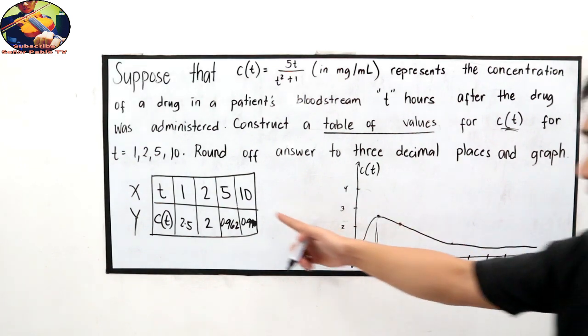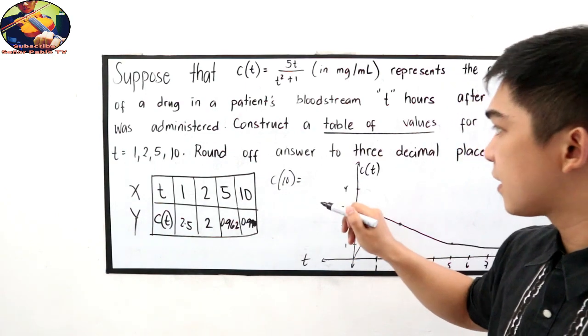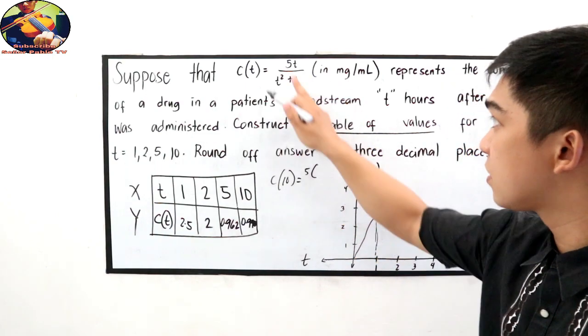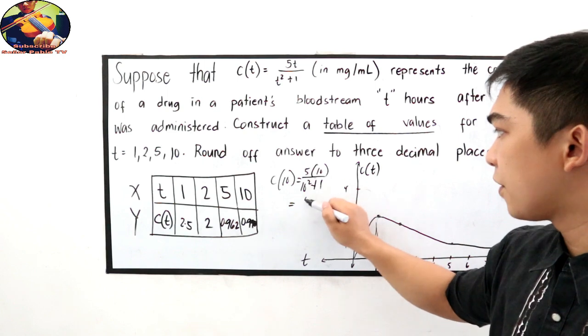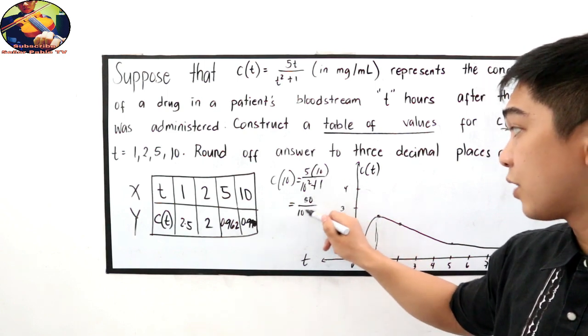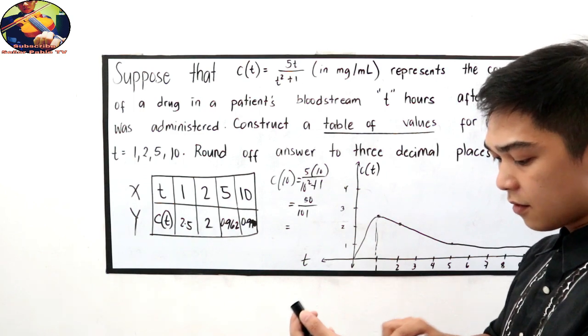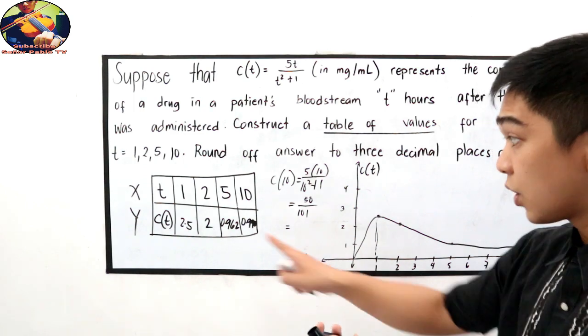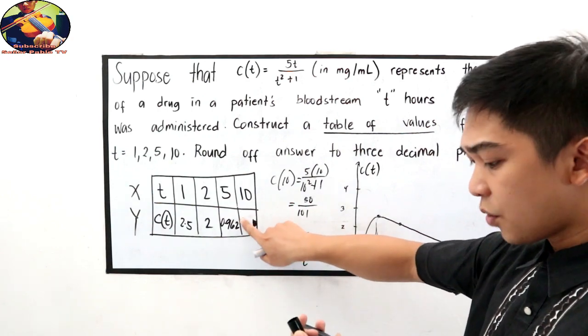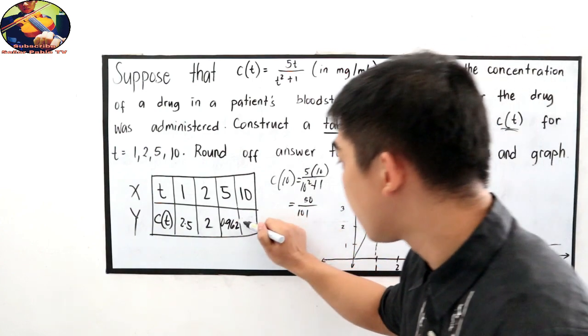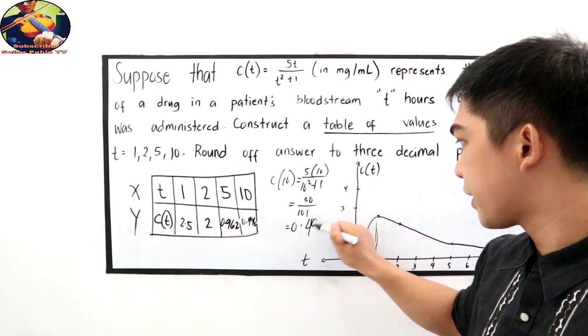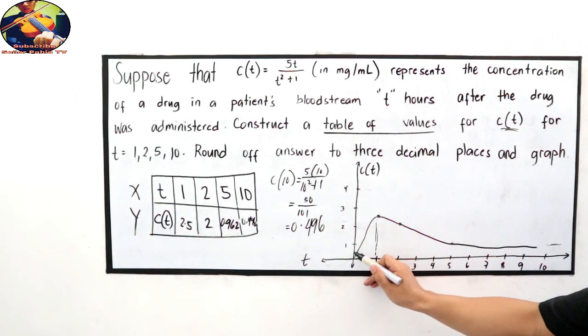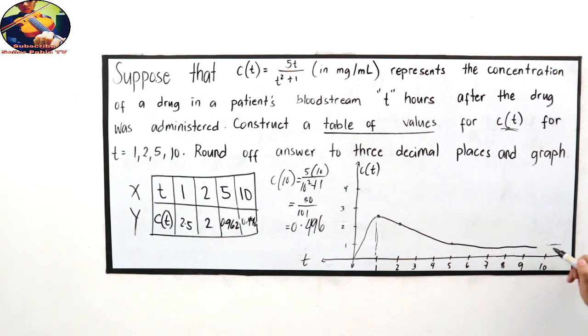So, let's check at ten. So, for c of ten, that is five times ten over ten squared plus one. So, 50 over 101. So wait, it should be, so 50 over 101, 50 divided by 101. So, this should be 0.496. You can check on the calculator. 0.496. There. 0.496. So, it's lower than between zero and one. Lower than 0.5. So, it's here. There. So, it should go down.